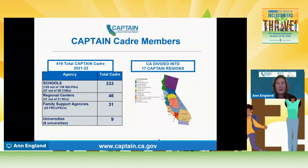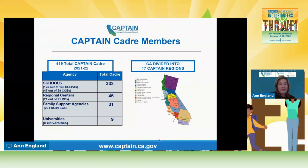We keep growing our family support agencies and are very indebted to them. They are the ones who in 2006 went up to Sacramento and said, 'You're not doing enough for individuals and families affected by autism.' Out of that came the Legislative Blue Ribbon Committee, and out of that came the report which said there needs to be a clearinghouse—everybody needs to know what these EBPs are for autism. That's kind of the inception of CAPTAIN.